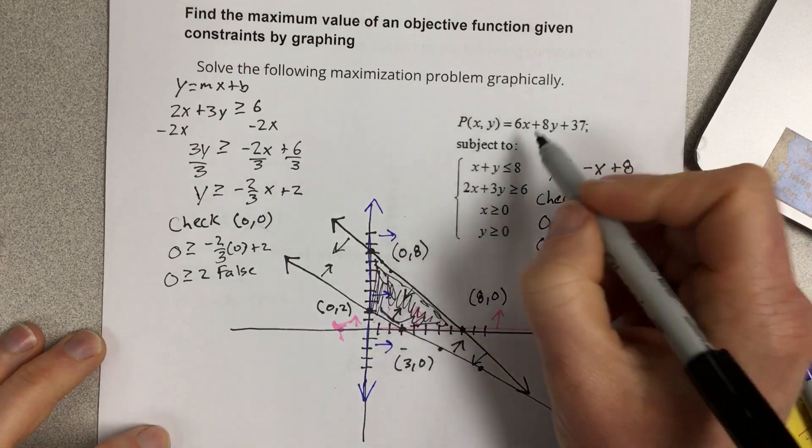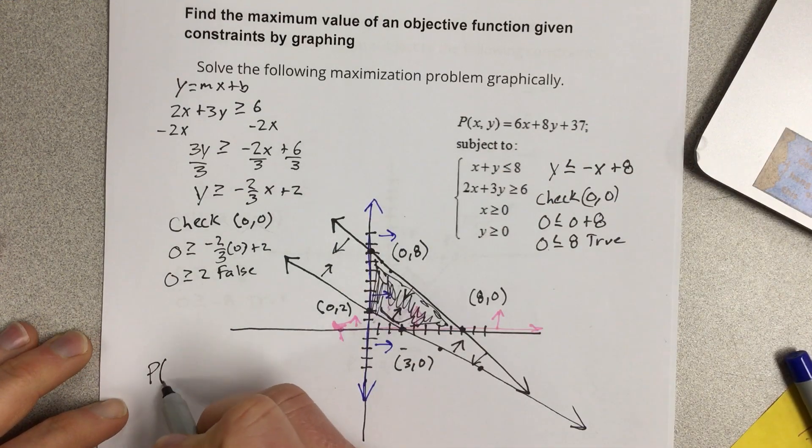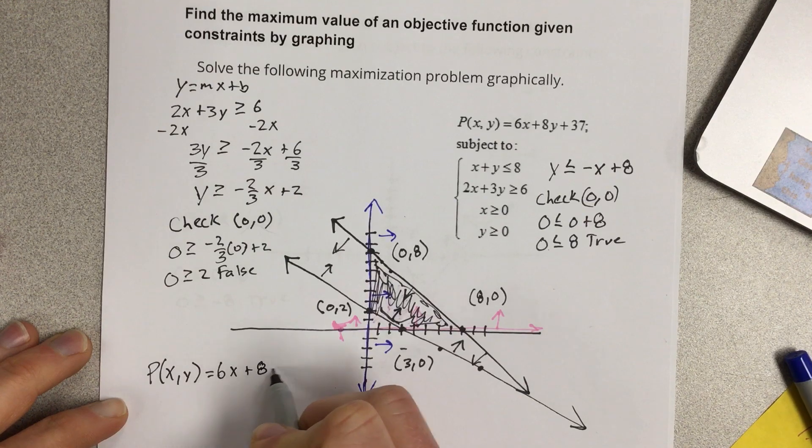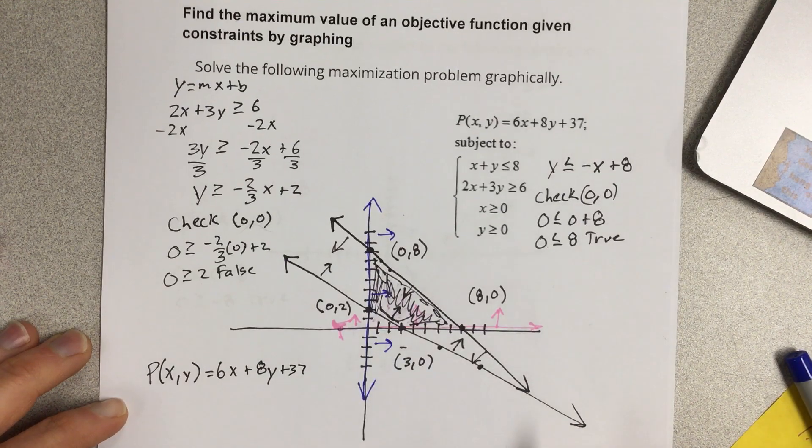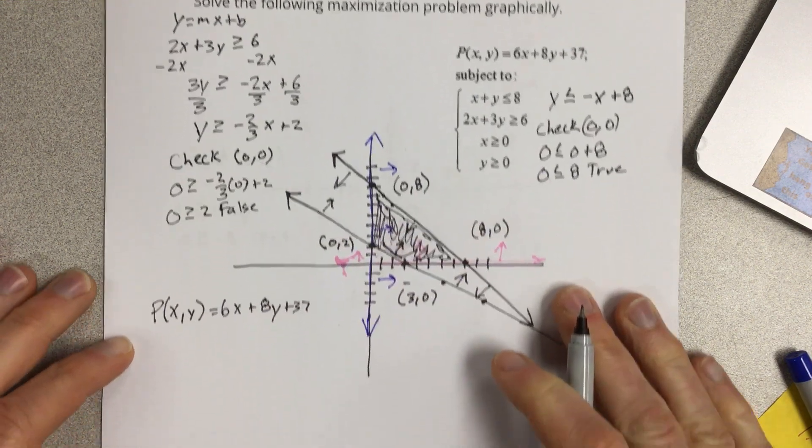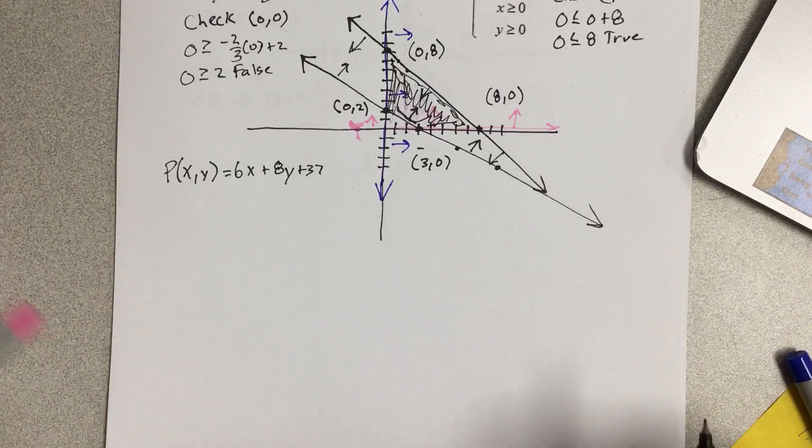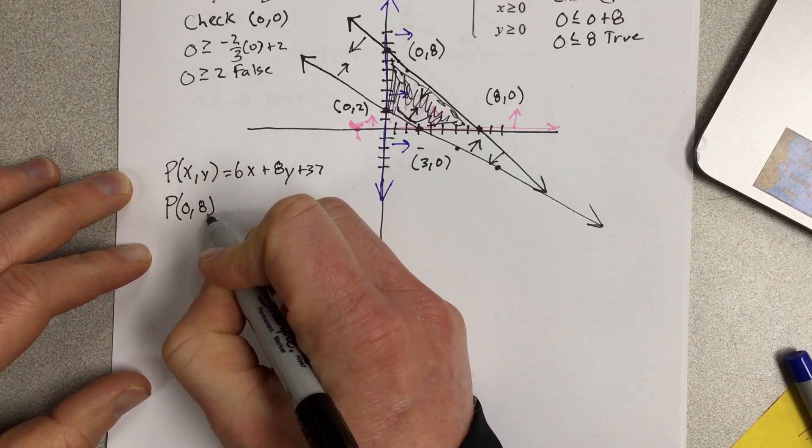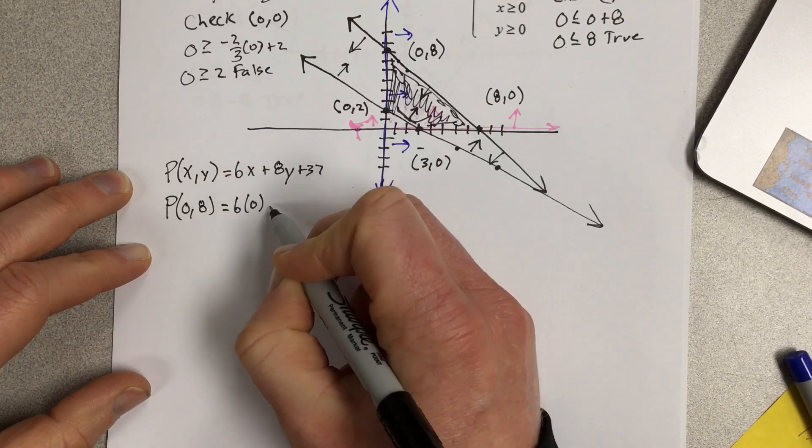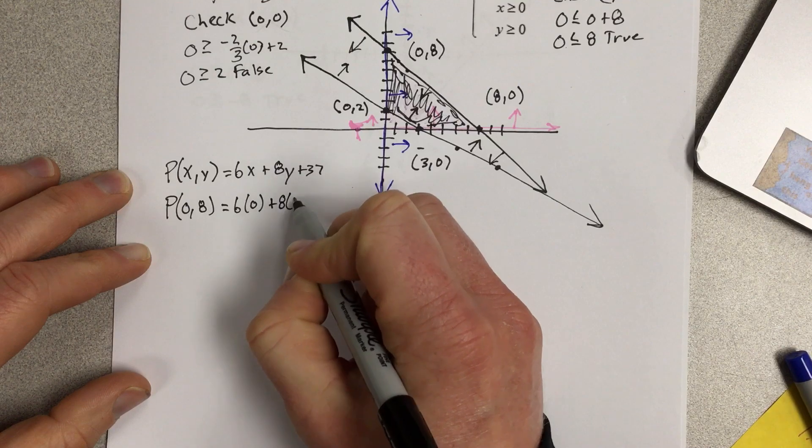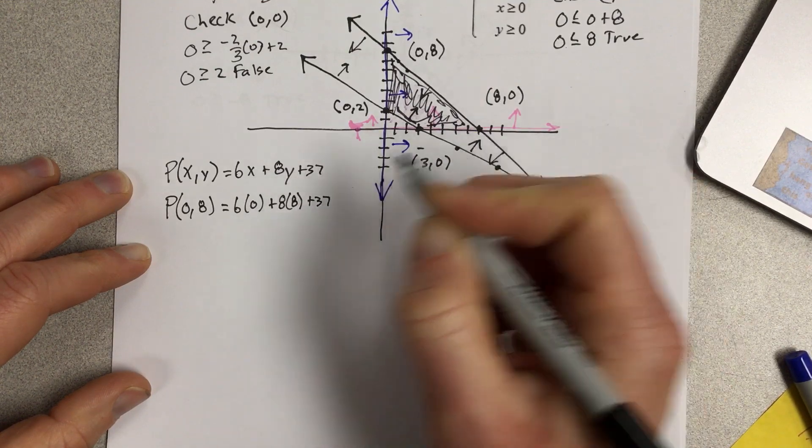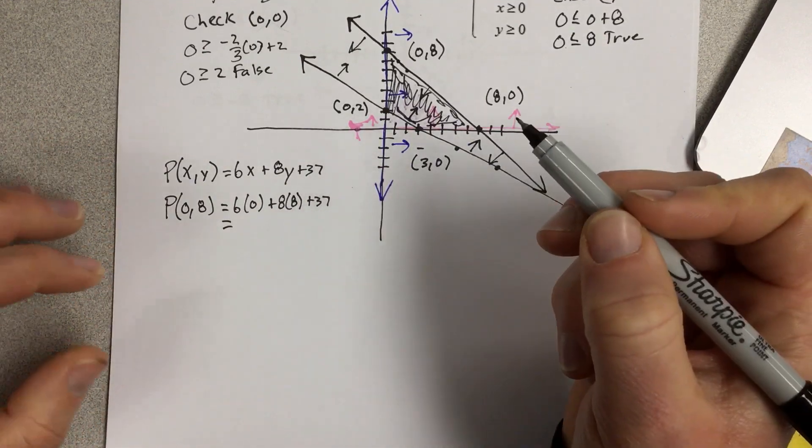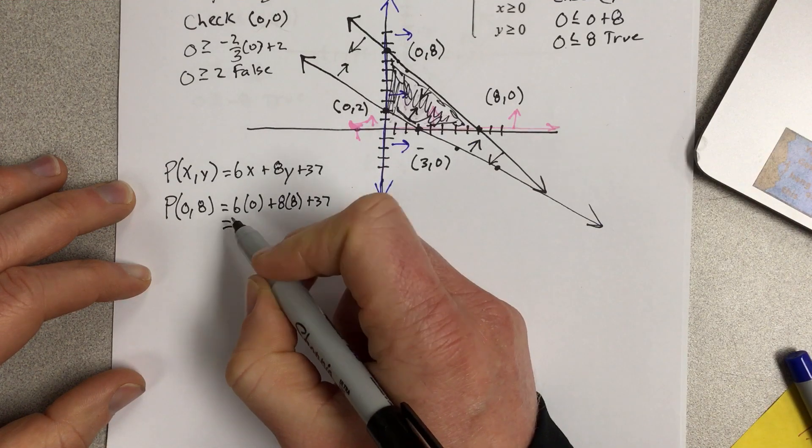So what we're going to do is we're going to take this equation and I'm going to plug those coordinates in and see which one's the largest. So we're going to start with P of 0, 8 would be 6 times 0 plus 8 times 8 plus 37. And that gives you 8 times 8 is 64, add 37, that'd be 94, it would be 101.